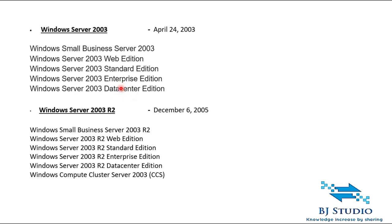I'll clearly explain all this when we come to the licensing concepts. The sixth edition is Windows Server 2003 R2. Another question for you: if you know what R2 means, go ahead and comment in the comment section. If you don't, don't worry — at the end of the video, I'll share what it means.